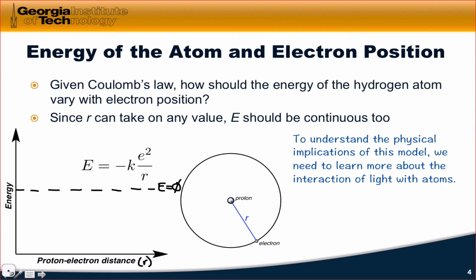Let's think about the nature of this Coulomb's law function in a little more detail. It says that the energy is proportional to 1 over r, 1 over the distance between the proton and the electron. In particular, there's a negative proportionality constant.